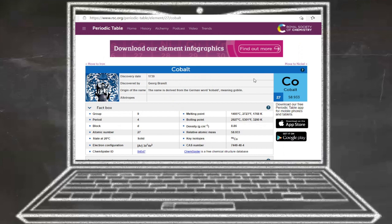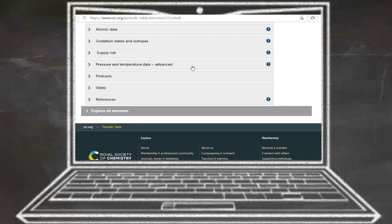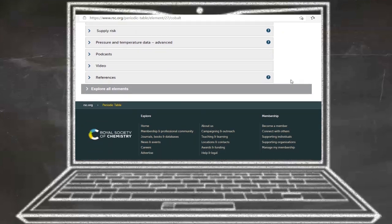If you go into cobalt, you get additional information, and you can look at things like uses, properties, history, atomic data, supply risk, plus additional information in podcasts and videos.